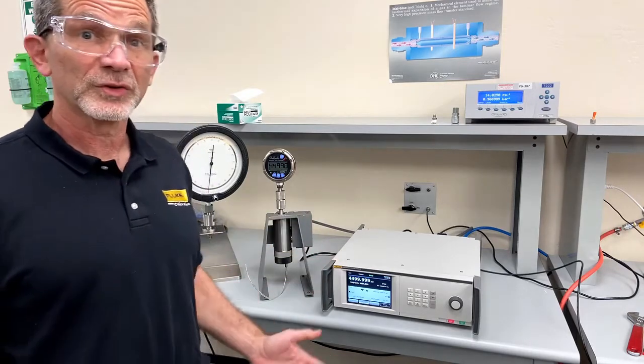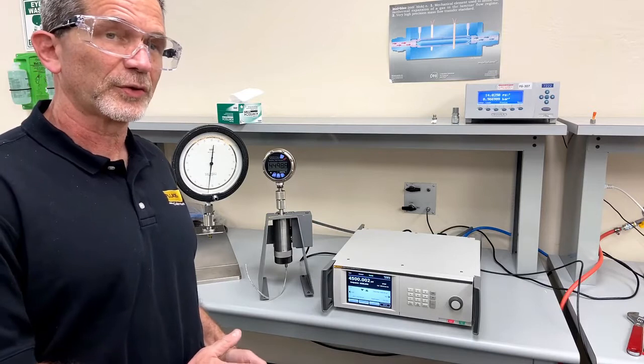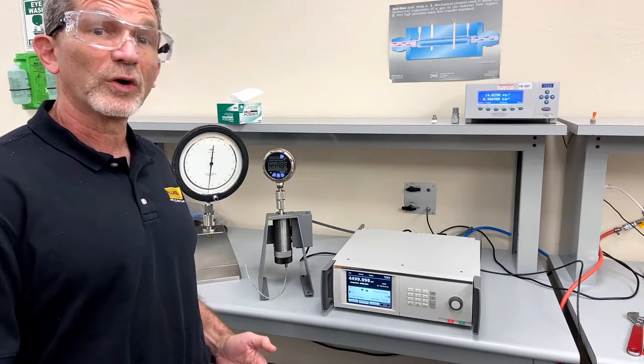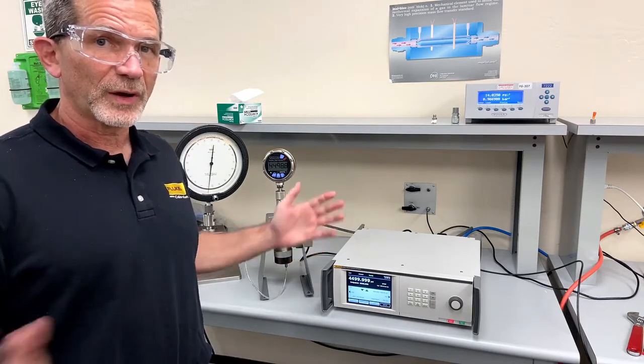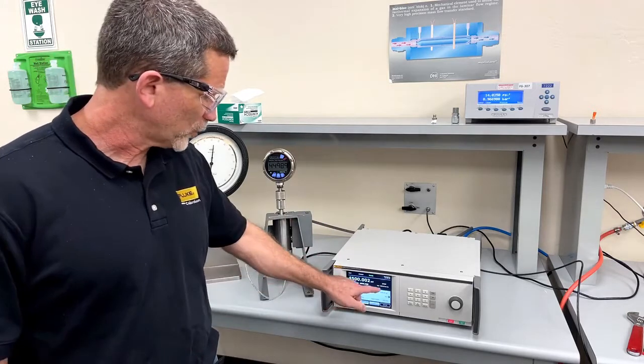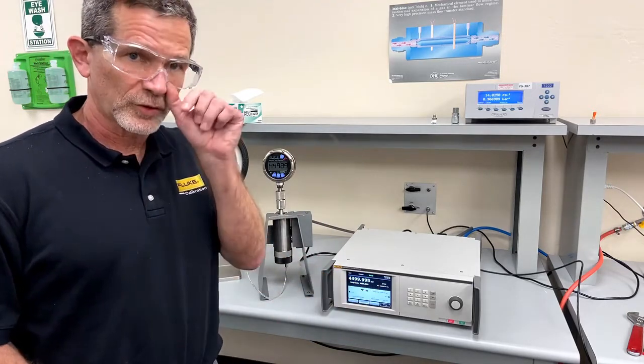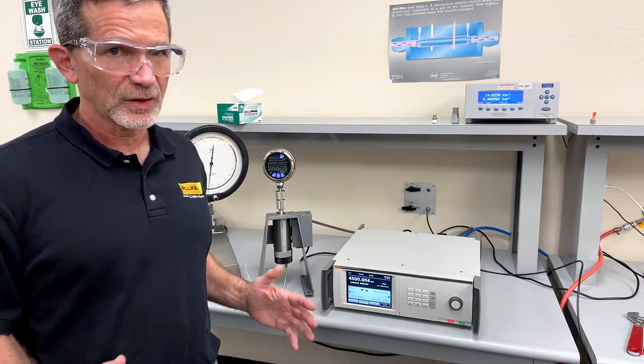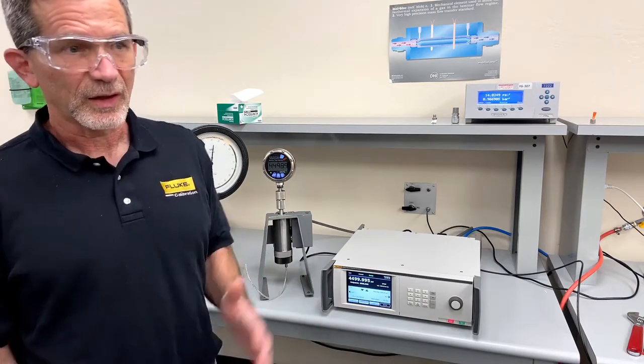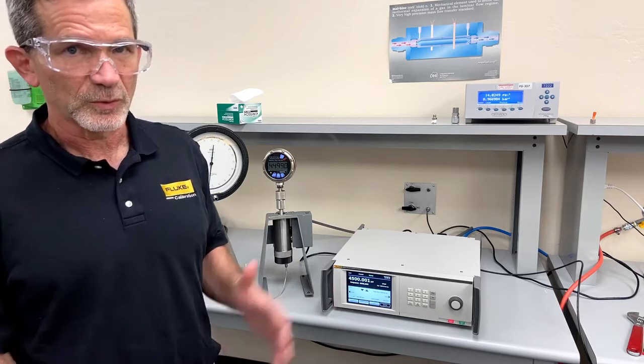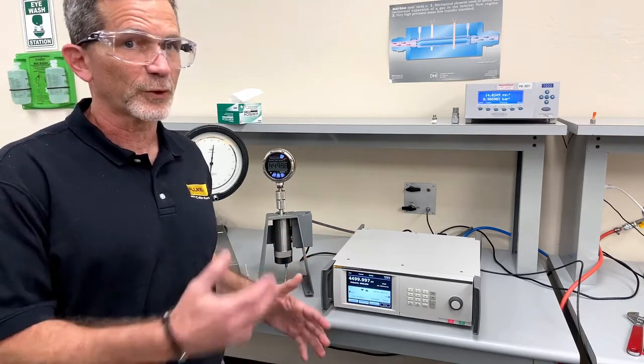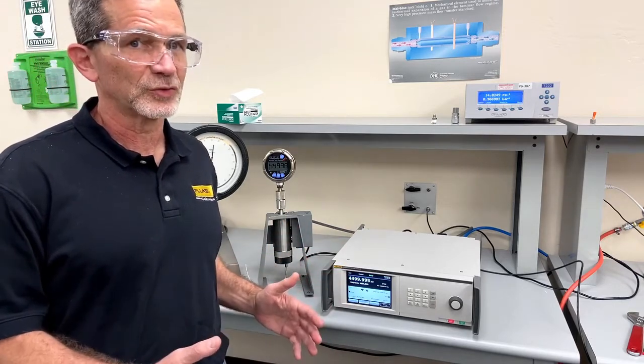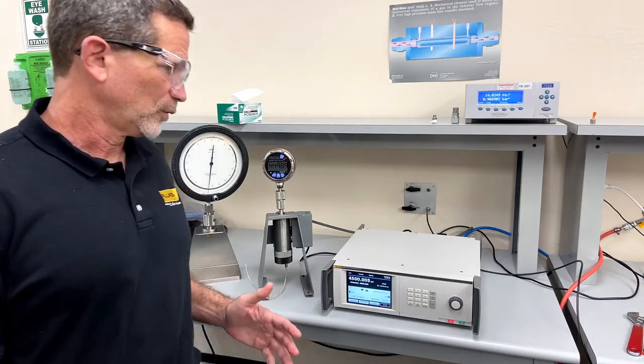Next we're going to go down all the way to 30 PSI to show you how well it controls over a very wide range. By the way, we are in what's called auto mode. So the controller is picking the module that has the best uncertainty for the point we're measuring every time. You do have the option to use fixed mode if you prefer that the same reference module is used every time.